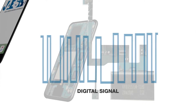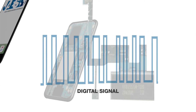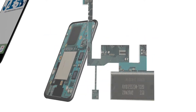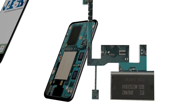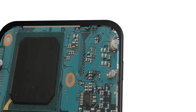Thus, we pass from the analog world to the digital world, since the wave is converted into discrete values represented by a sequence of zeros and ones. In this way, your voice, after being transformed into a digital signal, can be easily memorized and eventually sent through the antenna.